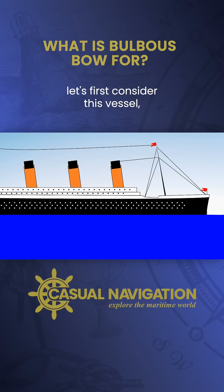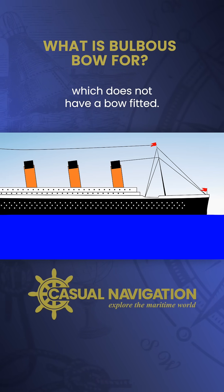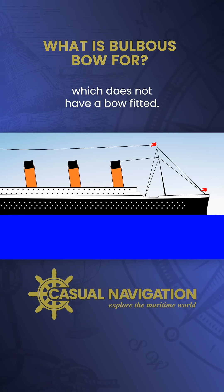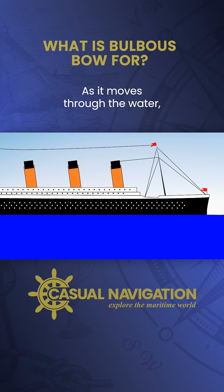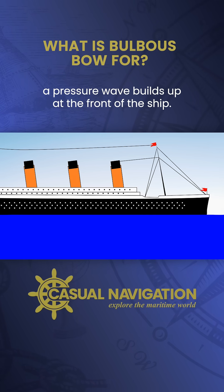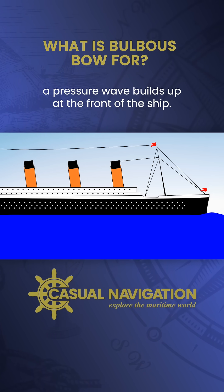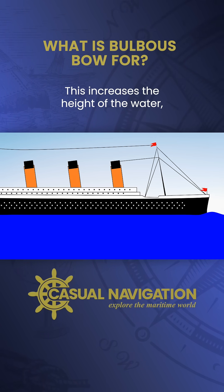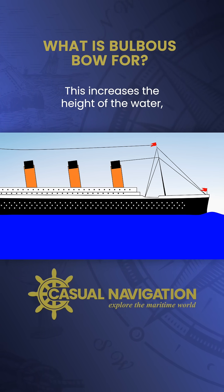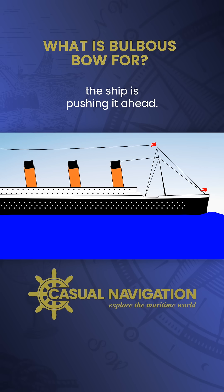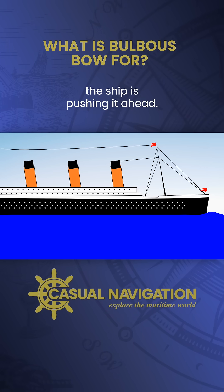To understand a bulb, let's first consider this vessel which does not have a bulb fitted. As it moves through the water, a pressure wave builds up at the front of the ship. This increases the height of the water the ship is pushing ahead.